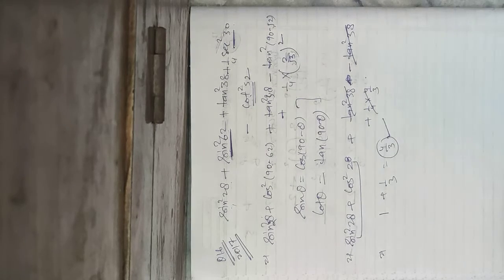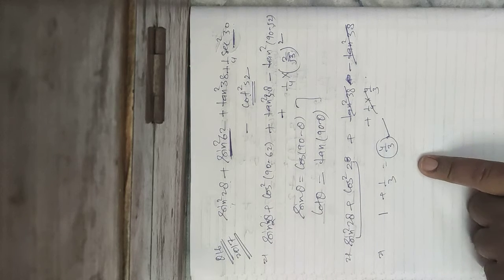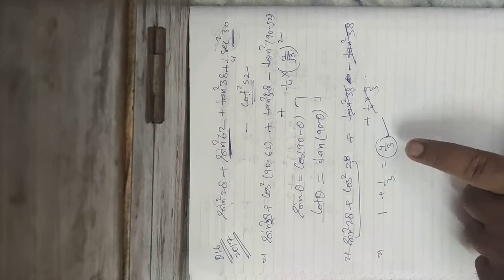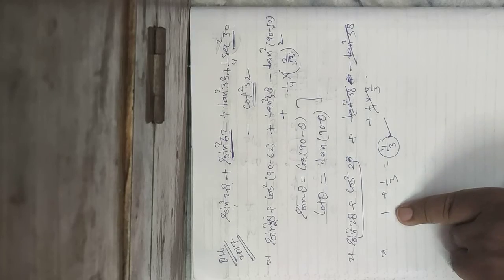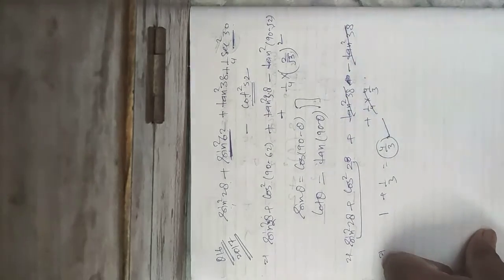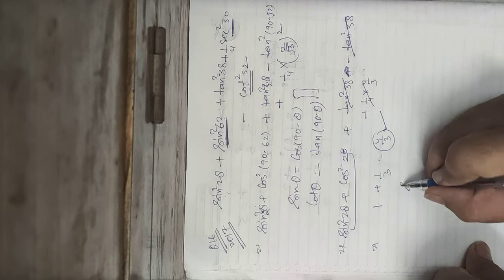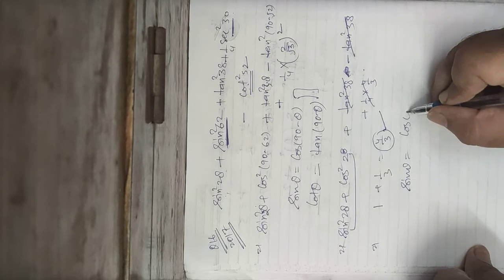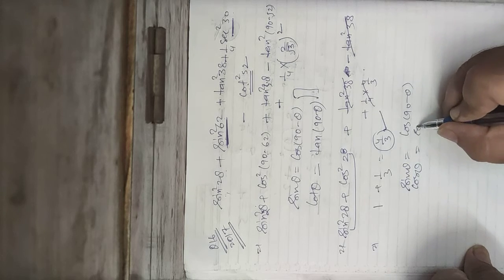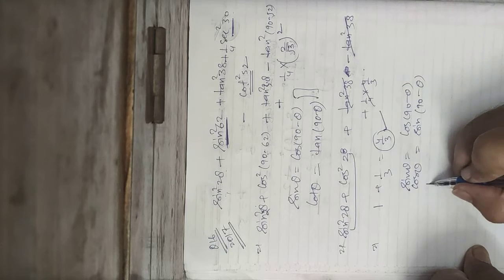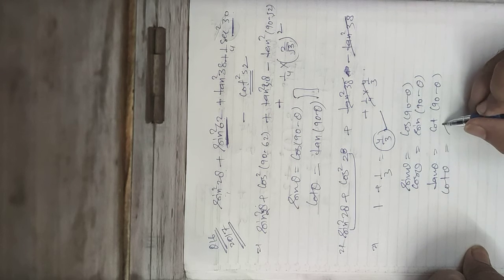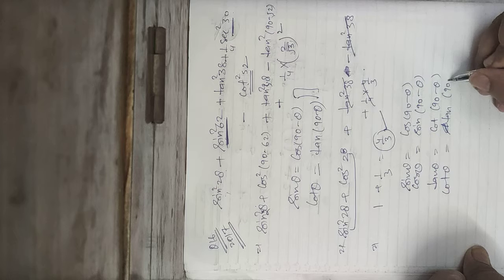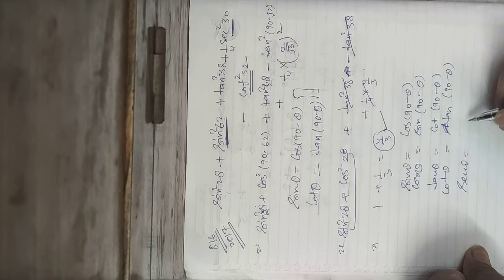The answer is 4/3. Let me explain what I did — this is completely based on complementary angles. sinθ is complementary to cos(90−θ). cosθ is complementary to sin(90−θ). tanθ is complementary to cot(90−θ). cotθ is complementary to tan(90−θ). secθ is complementary to cosec(90−θ).